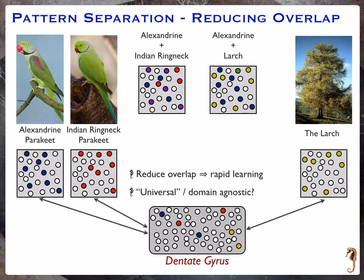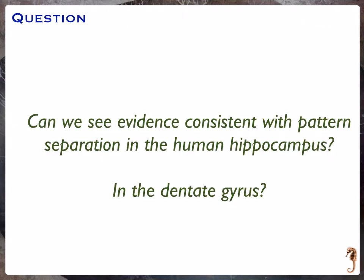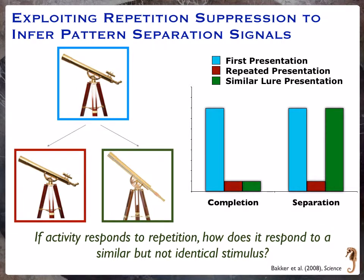So how might we actually be able to observe this in people? If I put somebody inside an fMRI scanner, I'm talking about representations at the level of neurons, but my fMRI voxels will have thousands and thousands of neurons. How can I possibly look at something at the level of a representation when my unit of recording is so coarse in resolution? Well, a technique we leveraged is to exploit repetition suppression.